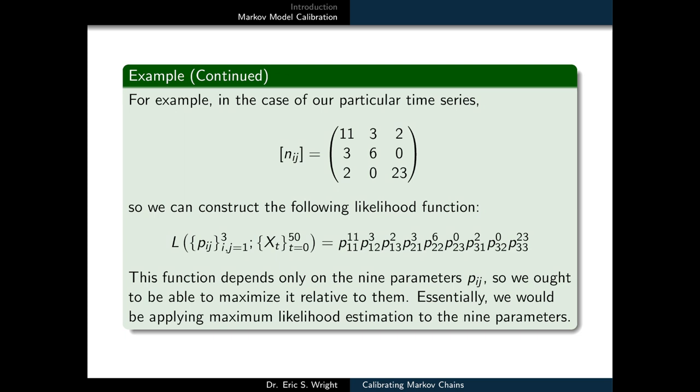So using those values, we could construct the following likelihood function of p11 to the 11, p12 to the 3 times p13 squared times p21 cubed times p22 to the 6th power times p23 to the 0th power times p31 squared times p32 to the 0th power times p33 to the 23rd power. Now this function depends only on the 9 parameters, pij. So we ought to be able to maximize it relative to them.